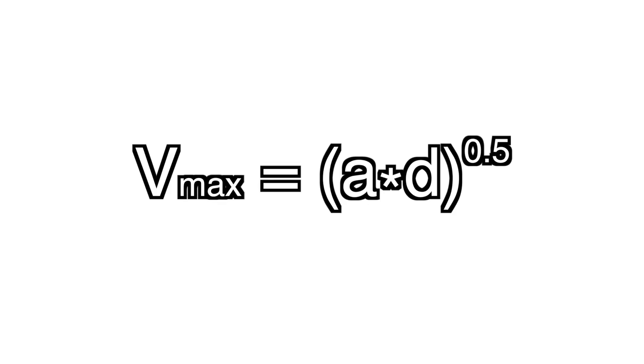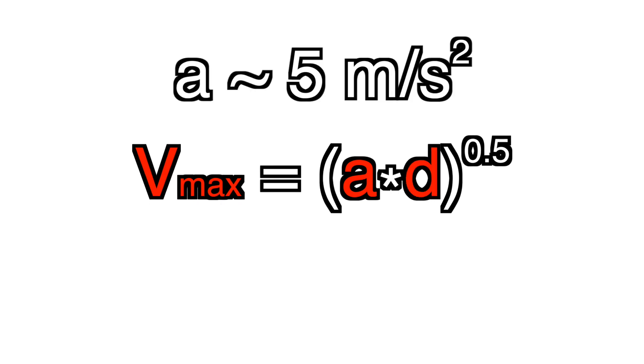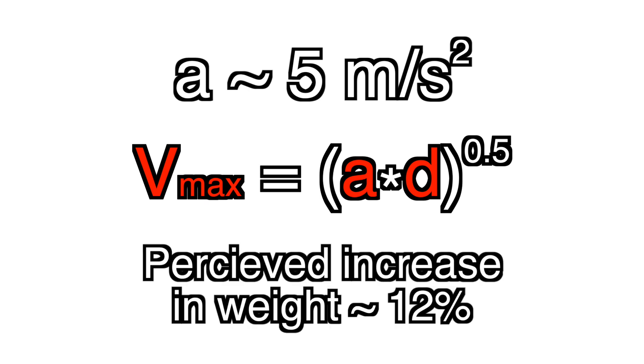The main reason is the chosen distance. If we assume a constant acceleration, the maximum speed depends only on the distance traveled. A reasonable acceleration is half a g, which would cause you to feel about 12% heavier.